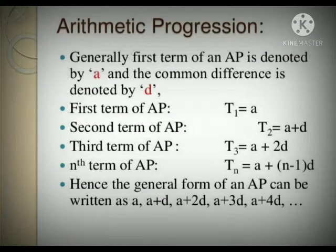Generally, the first term of an AP is denoted by the letter a and common difference is denoted by d. So first term t1 is a, second term t2 is a plus d and so on.